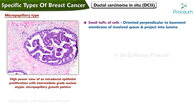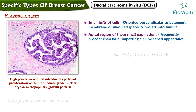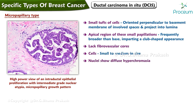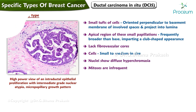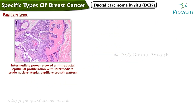The micropapillary type features small tufts of cells that are oriented perpendicular to the basement membrane of the involved spaces and project into the lumina. The apical region of these small papillations is frequently broader than the base, imparting a club-shaped appearance. The micropapillary type lacks fibrovascular cores, and the cells are usually small to medium in size with diffuse nuclear hyperchromasia. Mitoses are infrequent.